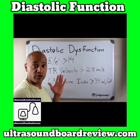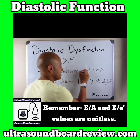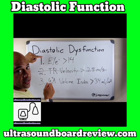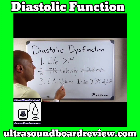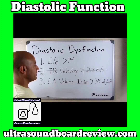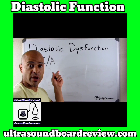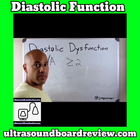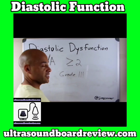If only two out of the three criteria are available — for example, if we're unable to get the TR velocity — and the patient is positive for one and negative for the other, then it's considered indeterminate. If they're negative for both, the patient is either grade 1 or normal diastolic function. If positive for both, it's grade 2 diastolic dysfunction. If your E to A ratio is greater than or equal to 2, then it's considered grade 3 diastolic dysfunction.